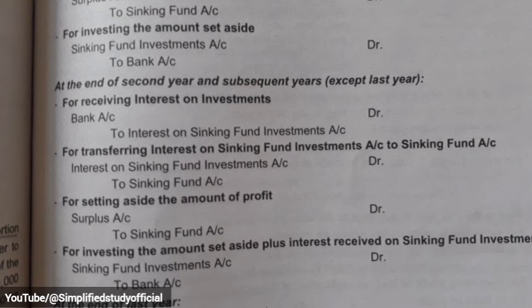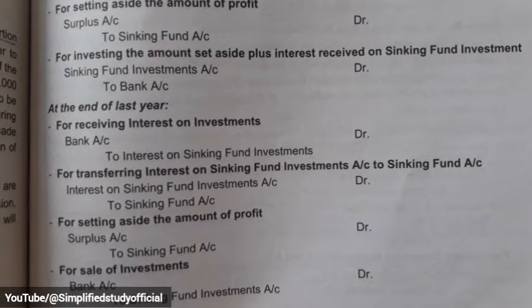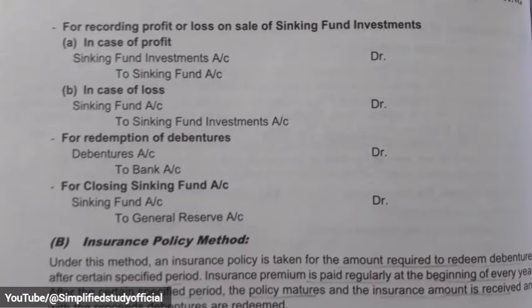In the last year, since the main target is to redeem the debentures, the investments are sold. The entry for selling investments is: Bank Account debit to Sinking Fund Investment Account. If there is a profit on sale, the entry is: Sinking Fund Investment Account debit to Sinking Fund Account. If there is a loss, the entry is: Sinking Fund Account debit to Sinking Fund Investment Account. Then to redeem the debentures: Debenture Account debit to Bank Account. Finally, to close the Sinking Fund: Sinking Fund Account debit to General Reserve Account.